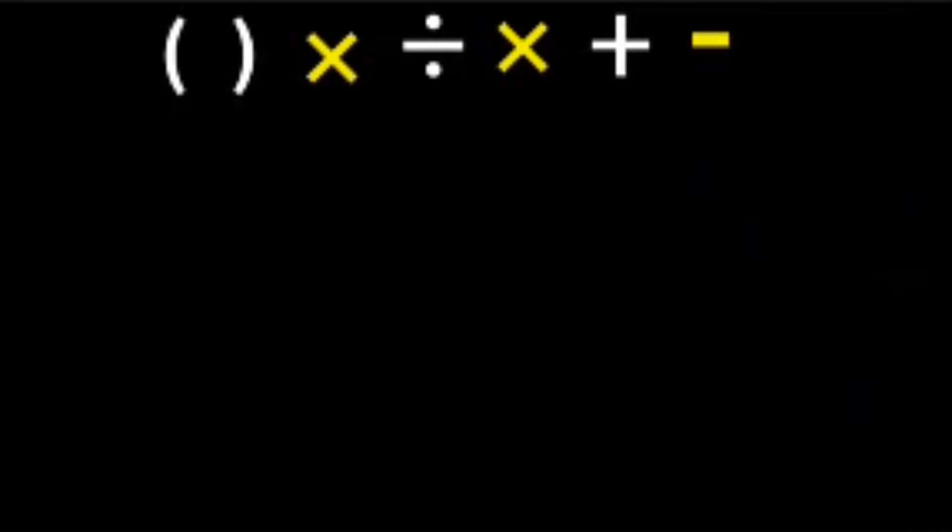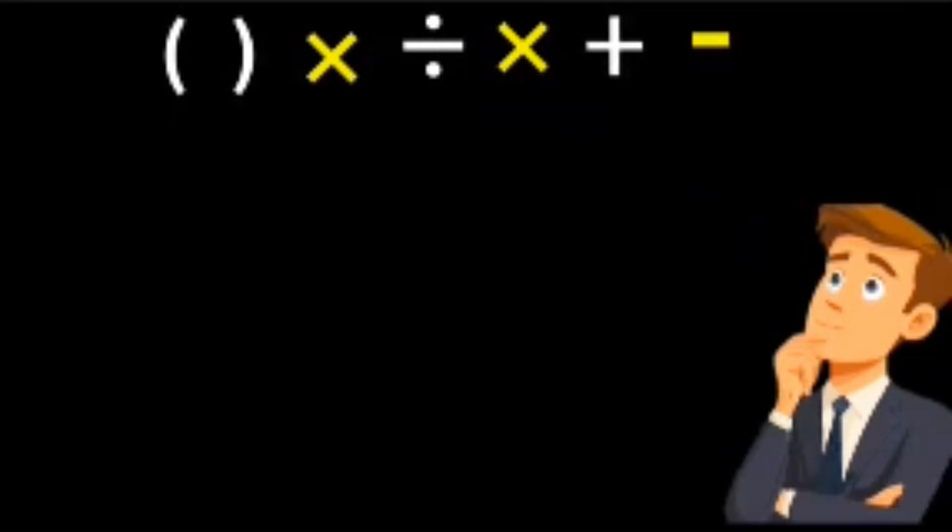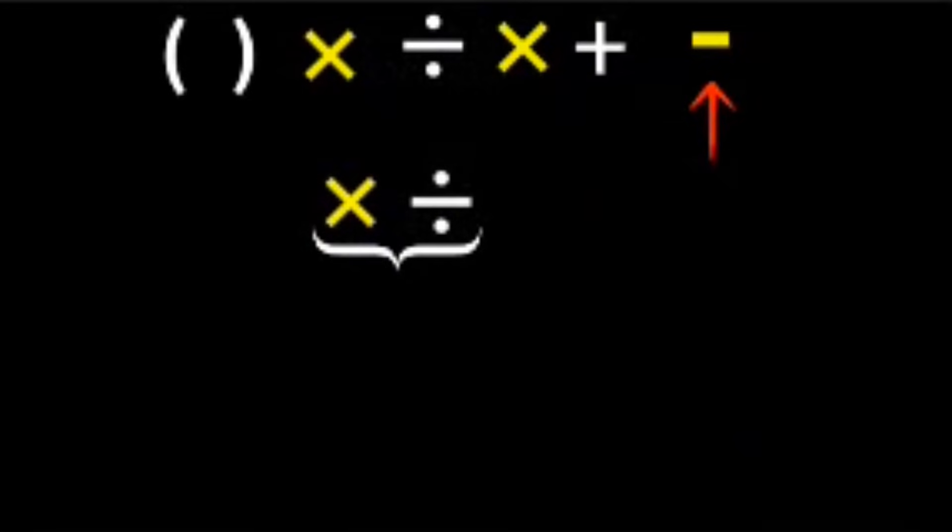This rule tells us the exact order we must follow when solving expressions like this. Division and multiplication always come before addition and subtraction, and they are solved from left to right. That part is critical.